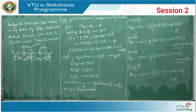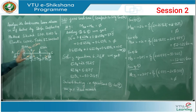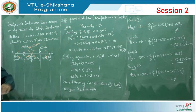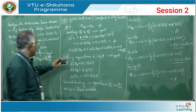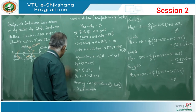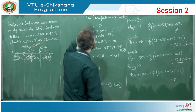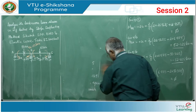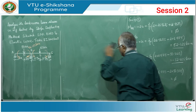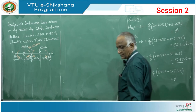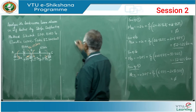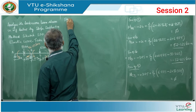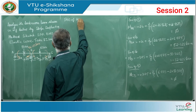The final end moments on the beam are: M_AB = 0, M_BA = 52.125 kN·m (clockwise), M_BC = minus 52.125 kN·m (anticlockwise), M_CB = 0. Transfer these to free body diagrams to find reactions and sketch the shear force and bending moment diagrams for each span.